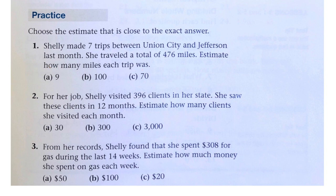So, if she did seven trips, and if each trip was 9 miles, like A, then she traveled 63 miles.